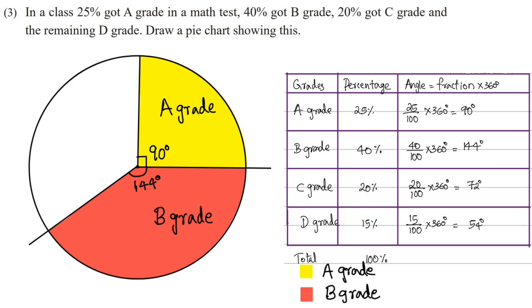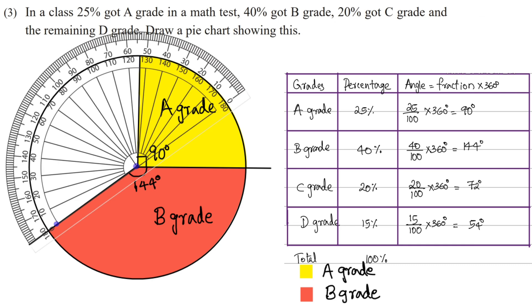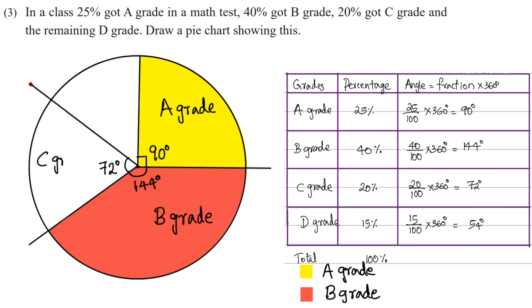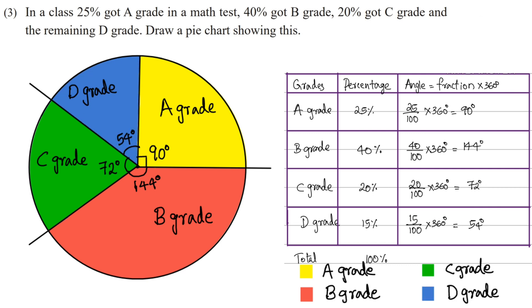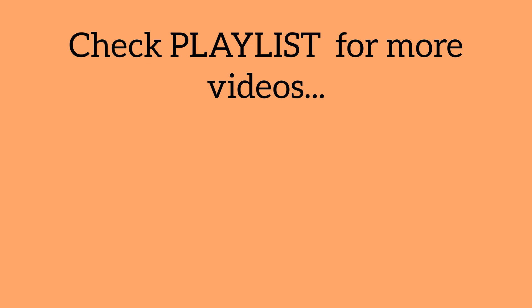We have the C-grade angle of 72 degrees. We place the protractor center and measure 0, 20, 40, 60, 72 degrees, marking the point. I will make the C-grade part in green color. The remaining section is the D-grade part, which I will make in blue color. We now have a complete pie chart.